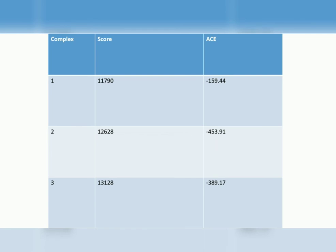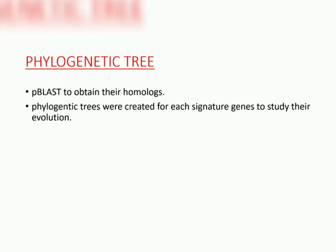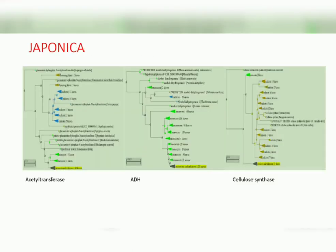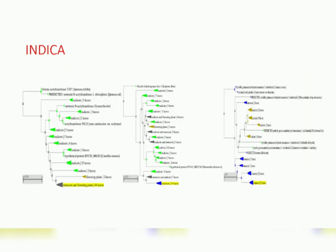We used protein BLAST to obtain homologues of the signature genes, and using the phylogenetic tree widget of BLAST we were able to produce dendrograms for different proteins of Japonica and Indica. The phylogenetic trees indicated the evolutionary relationships of these proteins in both species of rice. All of these will be used as datasets for the next stage of the project.